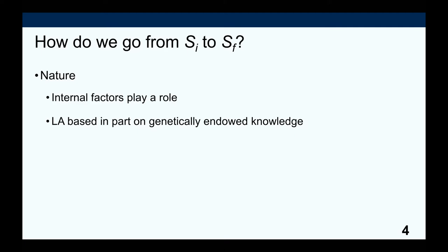This leads to the question of how we go from SI to SF in terms of the mechanisms and input involved. If you're a nativist and subscribe to the nature side, you assume that internal factors play a significant role — that whatever the mind already contains will help you learn your language. In other words, language acquisition is based in part on genetically endowed knowledge, commonly known as universal grammar: the shared knowledge hardwired into our biology of language, together with the language acquisition device active during the sensitive period.